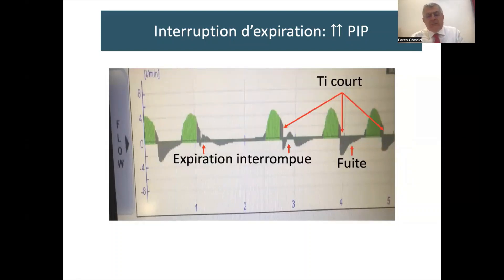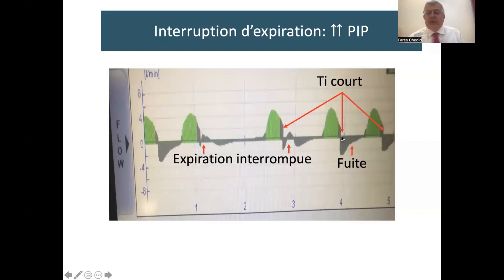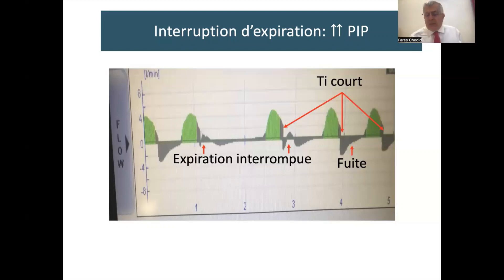Here is a patient of mine showing interrupted expiration: the patient started expiring, then inspired, then expired again. That small partial expired volume is incorrectly treated as the total expired volume, and the next breath's PIP shoots up. At the same time, we see inspired flow area larger than expired flow area due to leak — but that's handled by leak compensation. We also see a short inspiratory time in this tracing, which I'll address in a few slides. The key message: interrupted expiration can falsely increase PIP.